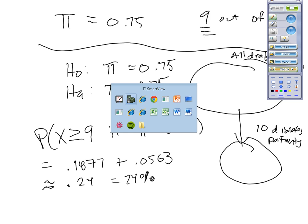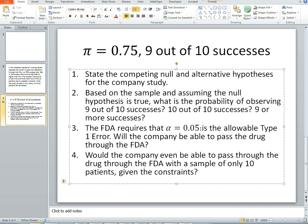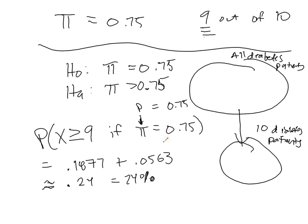So, the next question we want to ask is the FDA requires that alpha equals 0.05 as the allowable type 1 error. Will the company be able to pass the drug through the FDA?